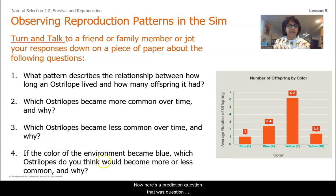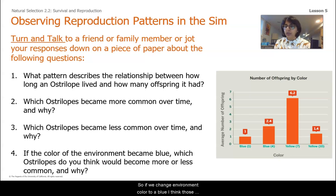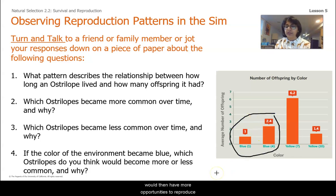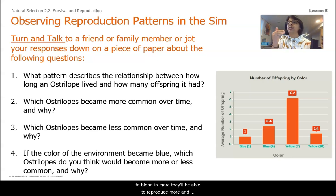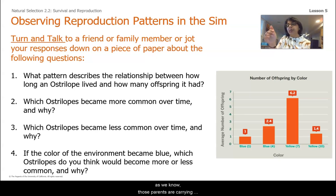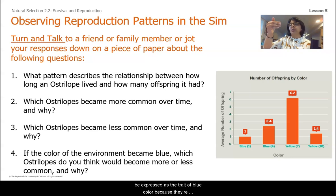Question four is a prediction: if the color of the environment became blue, which Ostrilopes would become more or less common and why? If we change the environment color to blue, I think those Ostrilopes with a blue color one or blue color four would become more common, because they would then have more opportunities to reproduce — they'd be able to blend in to that blue environment. Because they can blend in more, they'll reproduce more and have more offspring. And as we know, those parents carry the genes for the blue trait, so their genes would be expressed as the trait of blue color because they're able to reproduce more in an environment that is also blue.